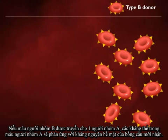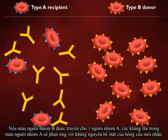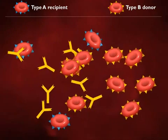If blood from a person who is type B is transfused into a person who is type A, antibodies present in the type A blood react with the surface antigens on the incoming red blood cells.